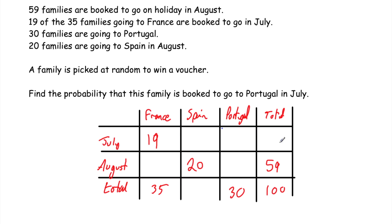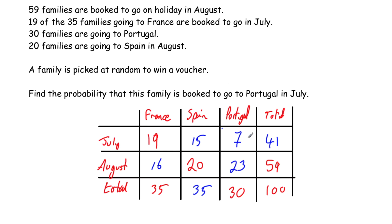There are 100 families in total and 59 going in August, so 41 are going in July. For Spain: 30 go to Portugal and 35 to France, that's 65, so 35 must go to Spain since 35 plus 35 plus 30 equals 100. 35 going to Spain with 20 in August means 15 are going in July. Now we can find the Portugal July number: there are 30 going to Portugal total, and since 19 plus 15 equals 34 in July, that means 7 must be going to Portugal in July. So the probability is 7 out of 100 — seven hundredths.